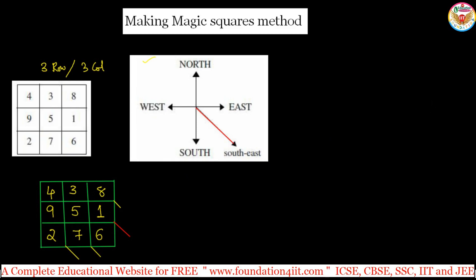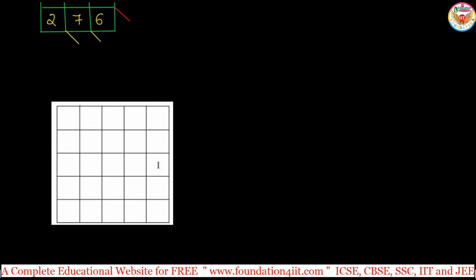Same logic, let us apply for the 5 rows, 5 columns. You will get clear idea. I will explain briefly how to write 5 rows, 5 columns. According to the rule, the center number. 5 into 5 is 25, 25 by 2, 12.5. So round number is 13. 13 should be middle, will come automatically.